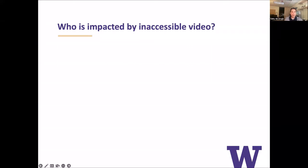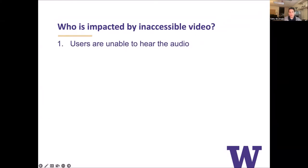So who is impacted by inaccessible video? When we think about accessible video, we could be thinking about who and how individuals will be impacted. Users who are deaf, hard of hearing, or who are in a noisy environment may not be able to hear the audio. The solution for that is to provide captions. Most video players can display captions and many video meeting platforms offer automatic or machine-generated captions that can be turned on on the fly. I'm going to present solutions to enabling captions in popular video applications used here at the university.